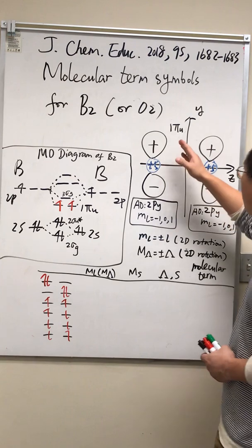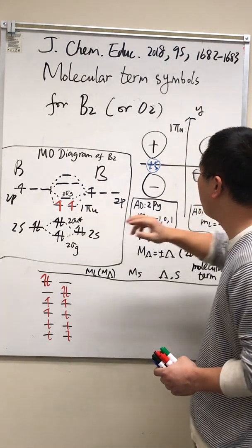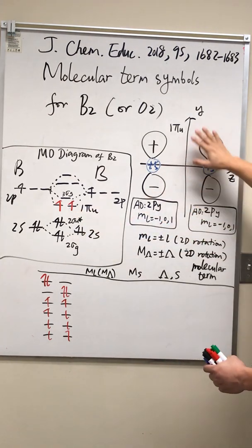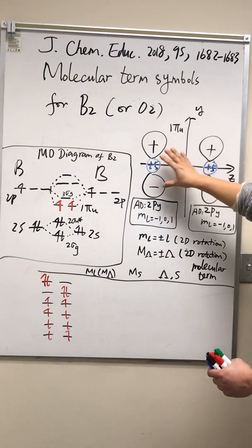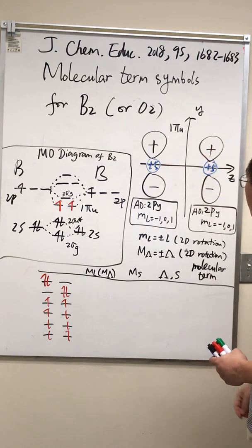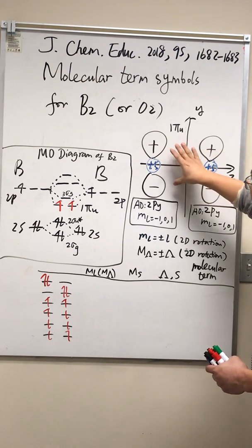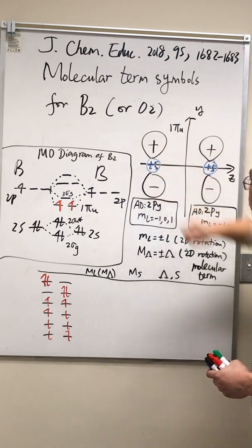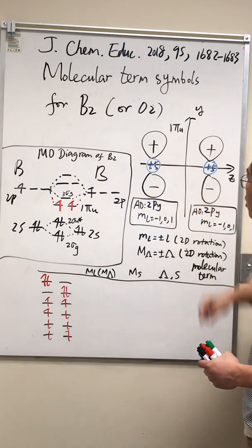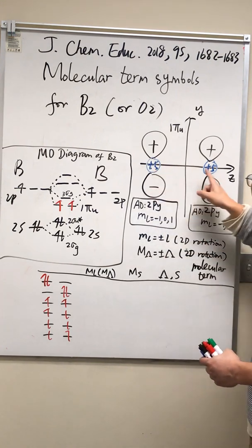But first, let's visualize this one Pi U orbital. We're looking at the one Pi U orbital made of two PY orbitals. So this is a PY orbital, another PY orbital here. They are centered at the nucleus with plus five charges in the nucleus of boron.